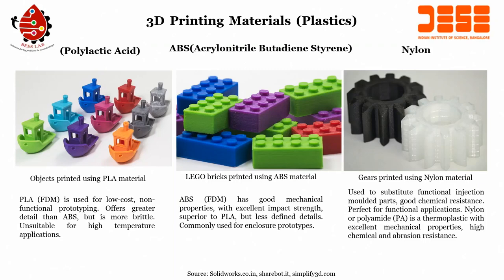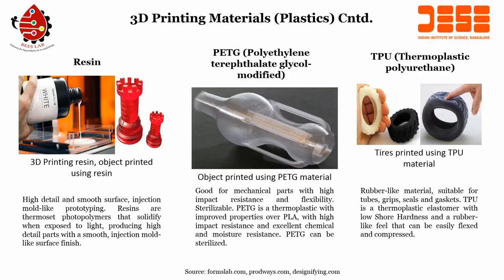ABS is generally used for enclosures. Nylon can be used even for gears and is a substitute for functional injection molded parts. It has good chemical resistance and is perfect for functional applications, being a thermoplastic with excellent mechanical properties and high chemical and abrasion resistance. Nylon can be used as a material for several applications.